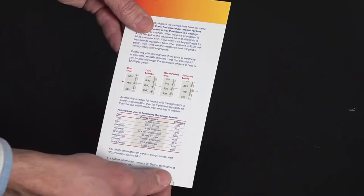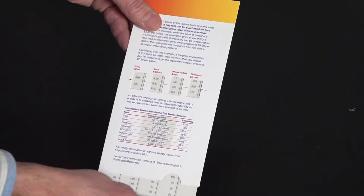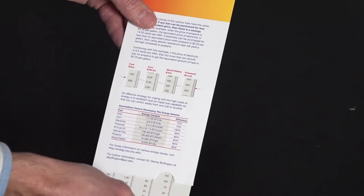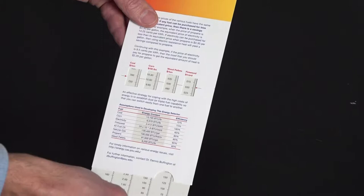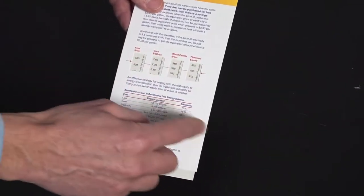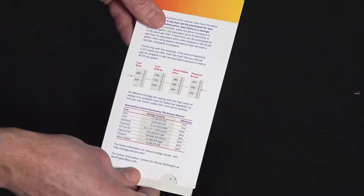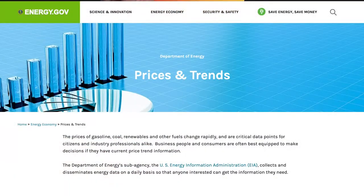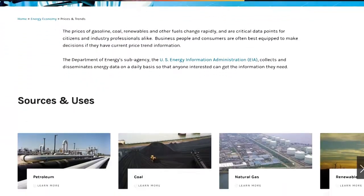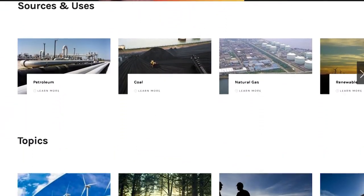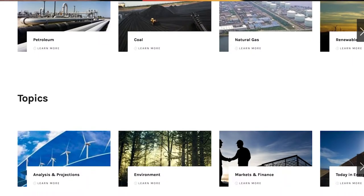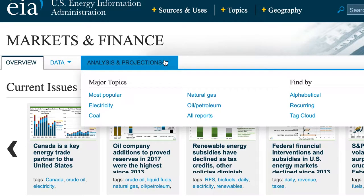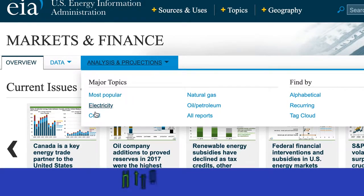Inside the energy selector is a slider that can be moved up or down to change the energy prices that show up in the windows. To use this device, first look up the current costs of the fuels you are considering. Checking your own utility bills is probably the easiest place to find this information, but there are some good online sources of energy costs as well.